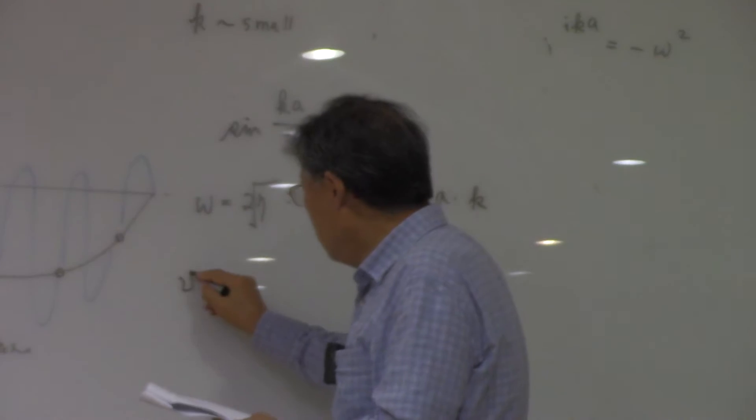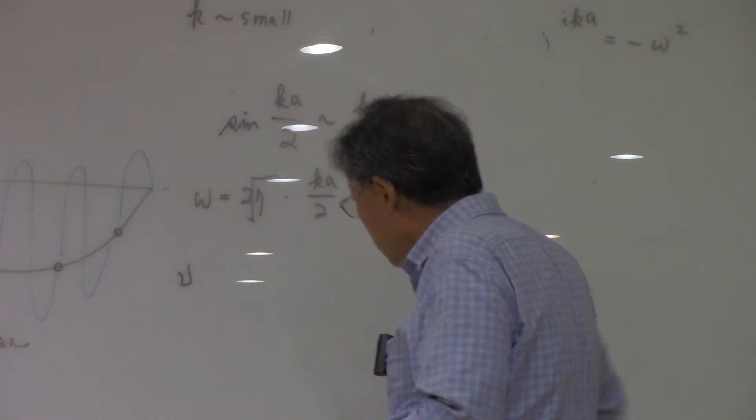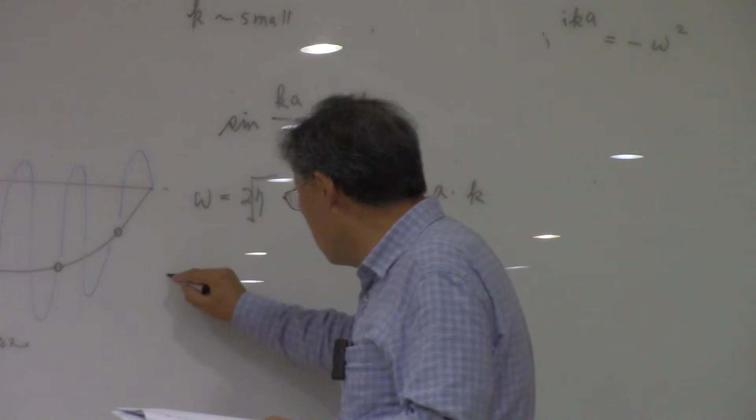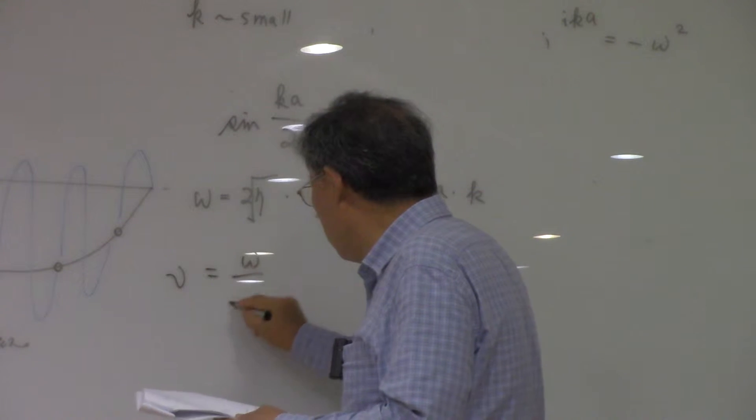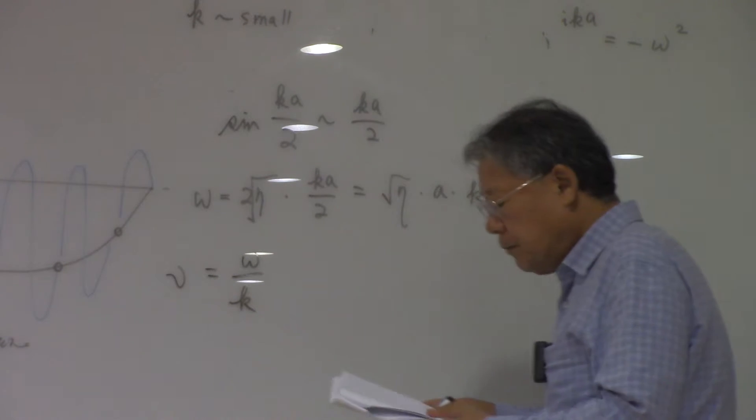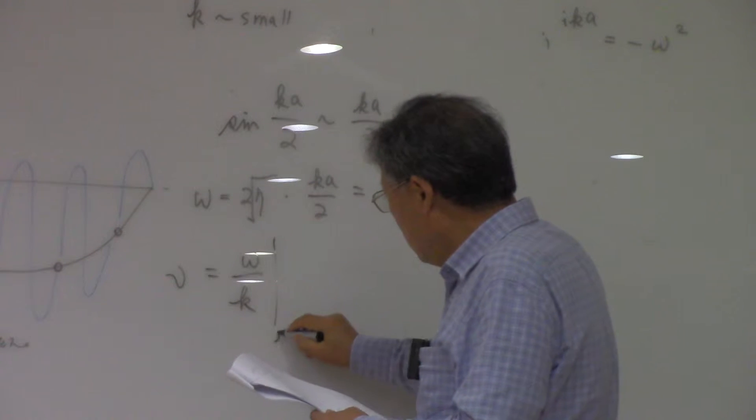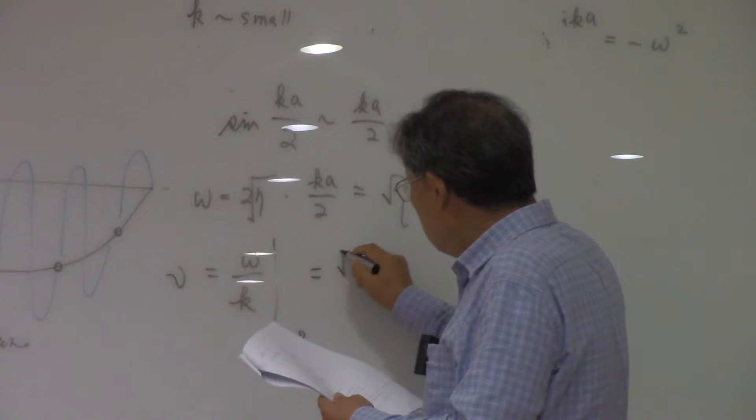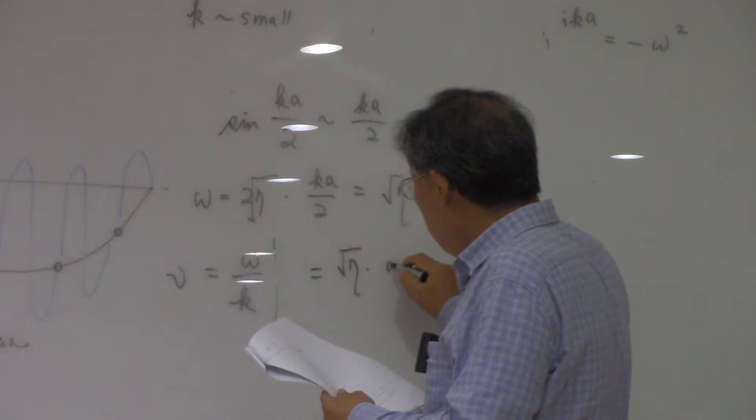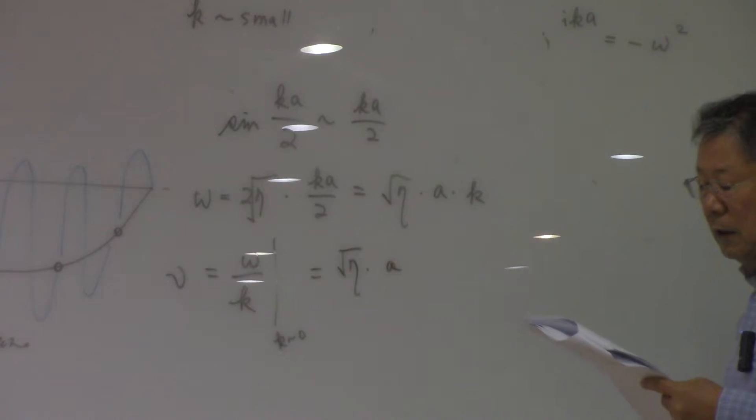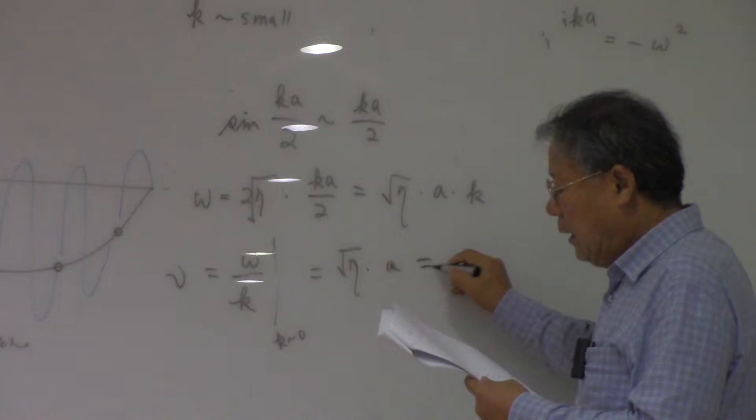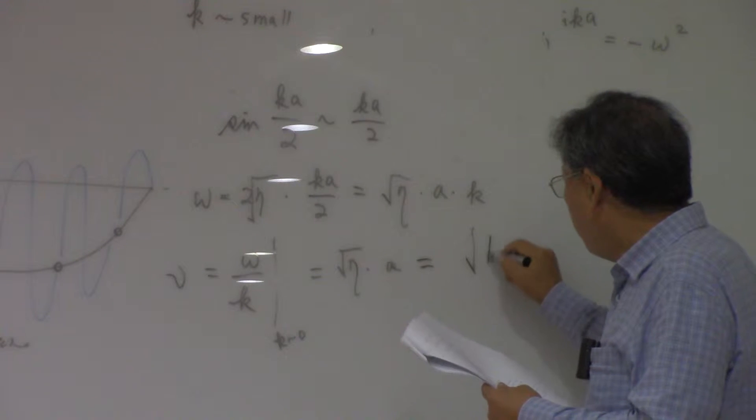The velocity is going to be omega over K. At K equal to 0, it's going to be root eta A, and that is FA over M.